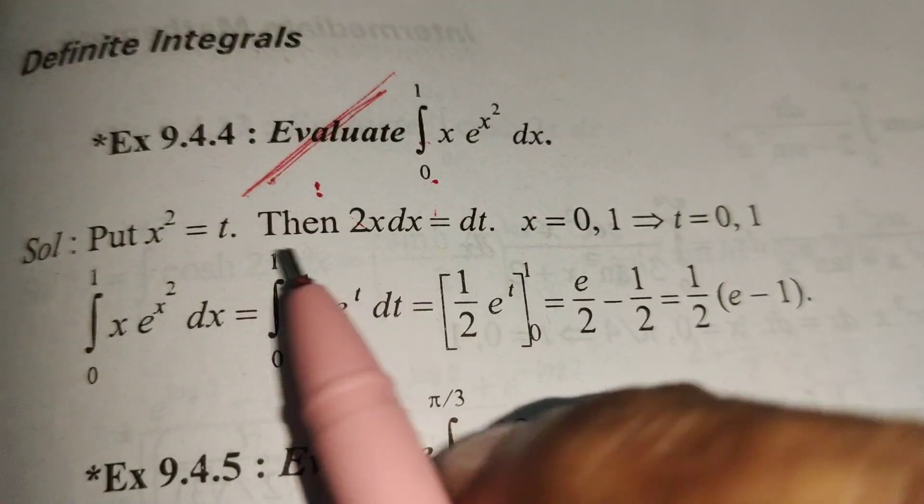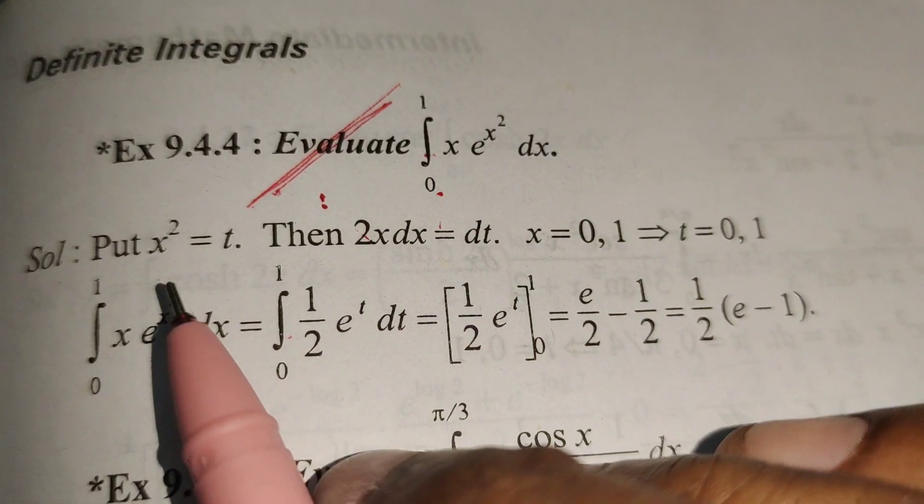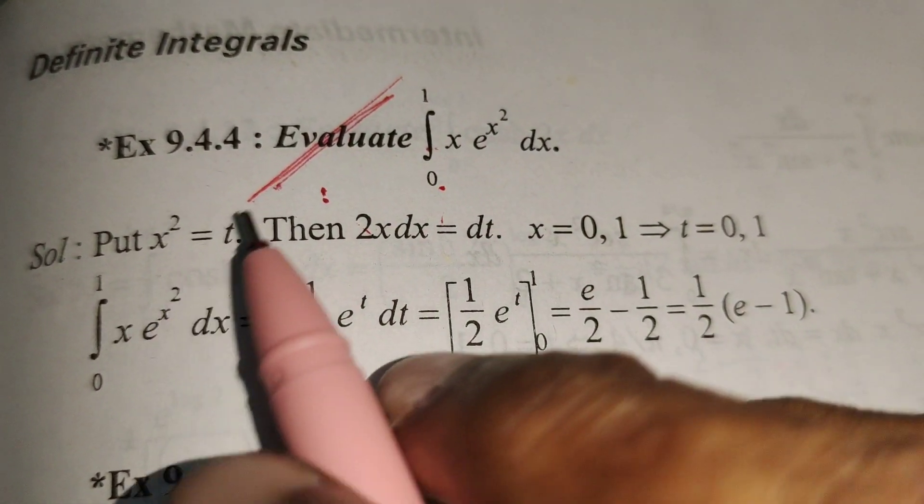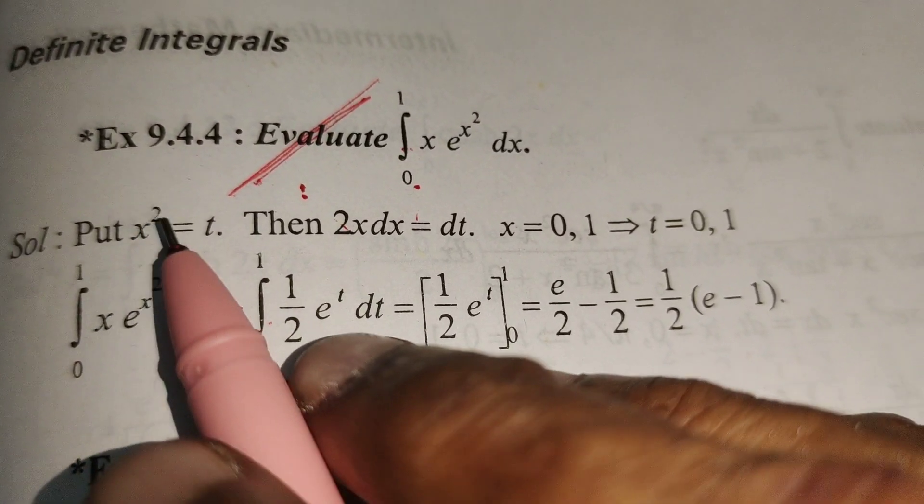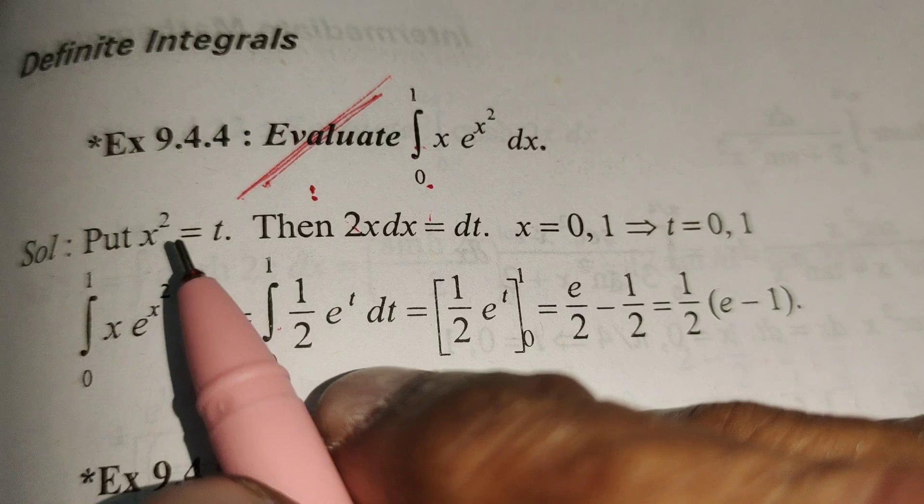Now to solve this, we use the substitution method. Put x² = t. We differentiate this with respect to x, giving 2x dx = dt.